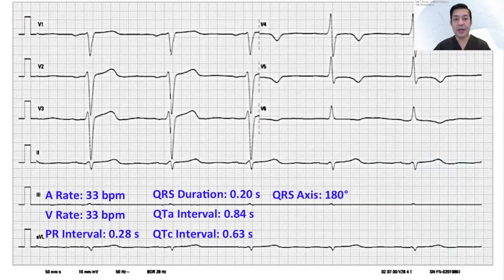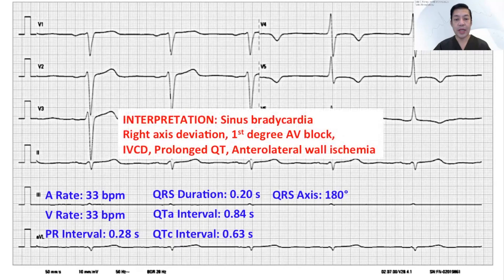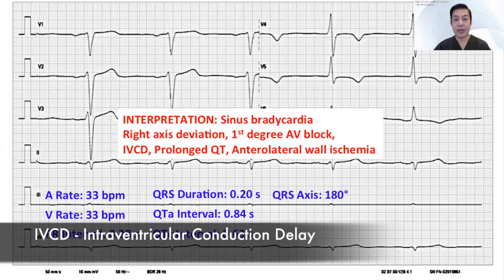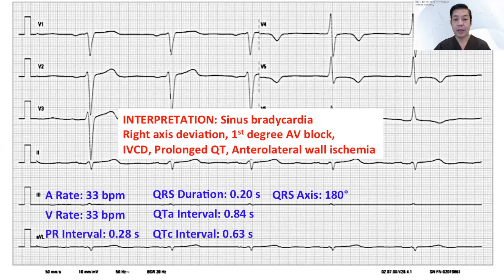Examining the precordial leads, we can see normal progression of the R-wave from V1 to V3. However, V4, V5, and V6 exhibit T-wave inversions. So looking at all the intervals and duration, we interpret this as sinus bradycardia because the rate is slow — lower than 60. Right axis deviation, with the axis at 180 degrees. First degree AV block because the PR interval is 0.28 seconds, more than the normal 0.20. An IVCD because the QRS duration is 0.22. A prolonged QT interval — assessed at 0.84 and corrected at 0.63 — and the presence of anterolateral wall ischemia.